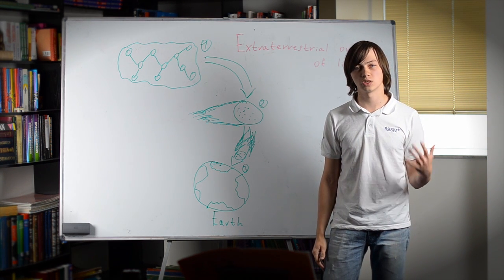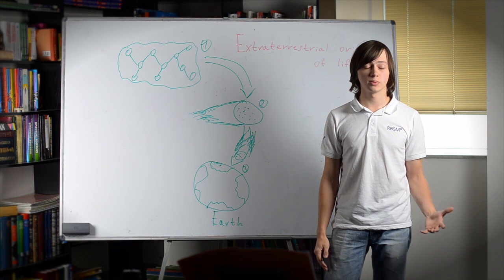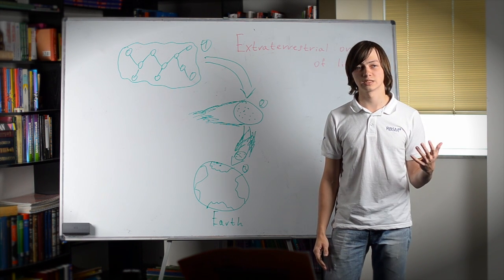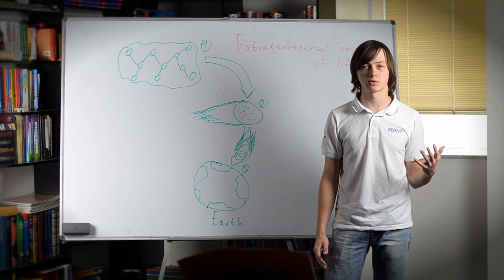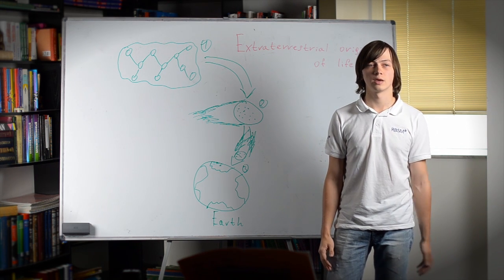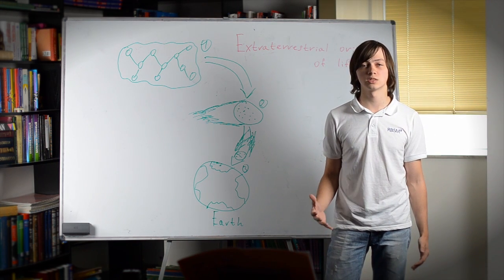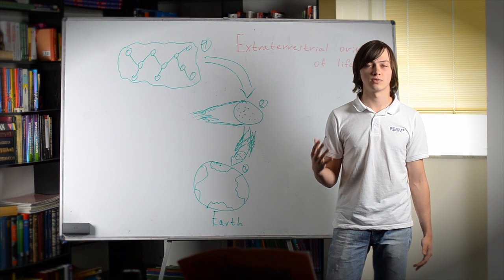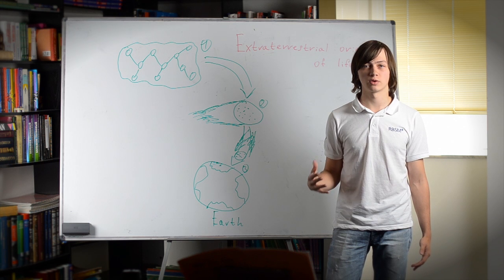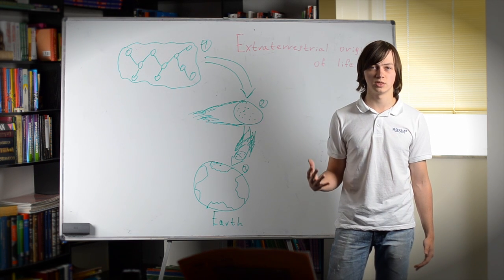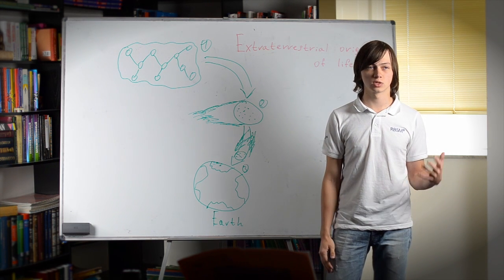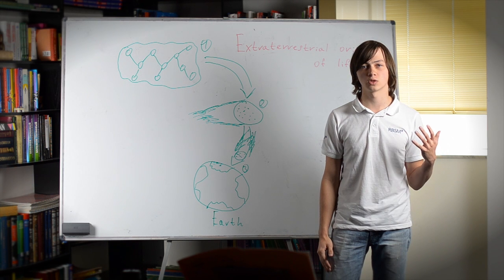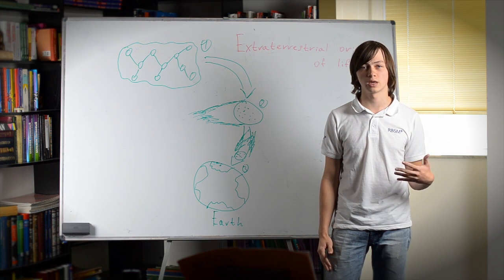Panspermia also suggests that simple life is widespread in bodies like meteors and comets throughout the solar system and possibly beyond. Comets that hit the Earth not only delivered a lot of water on its ocean, but also carry fully functional living microbes which evolved in space for a period of billions of years. This could explain how our life arose so quickly after our Earth became inhabitable.